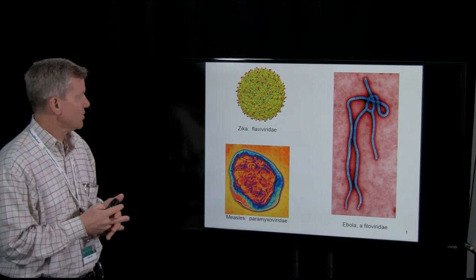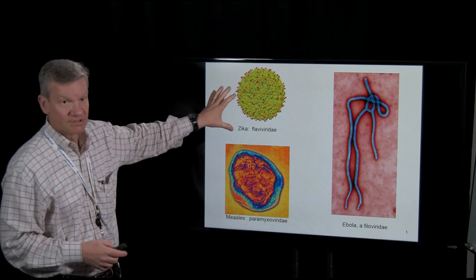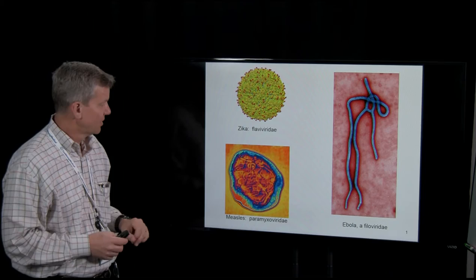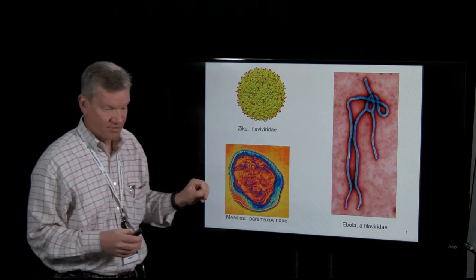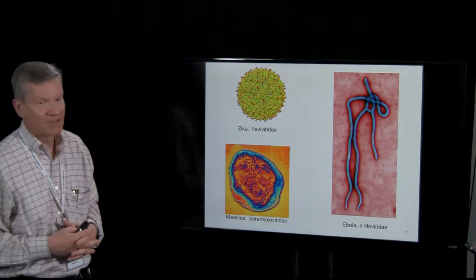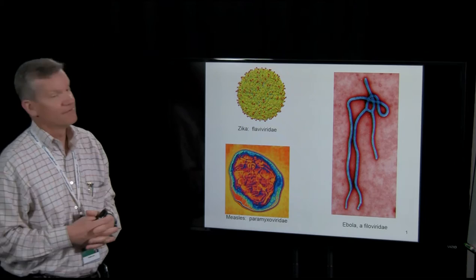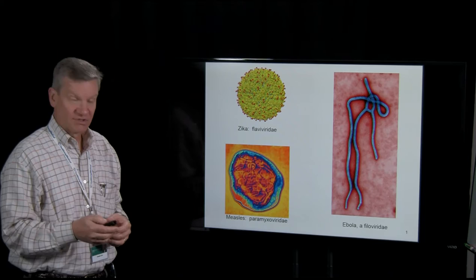Remember, viruses come in different shapes and sizes. Zika virus has been in the news recently. Measles virus has also been in the news at Disneyland. Here's Ebola, which is very scary — these are called the hot zone viruses. These are filamentous viruses belonging to the Filoviridae family. Other viruses in addition to Zika that belong to the Flaviviridae family include West Nile virus. Viruses are always around us and in the news.